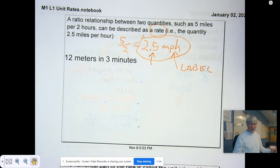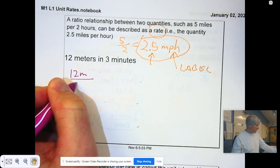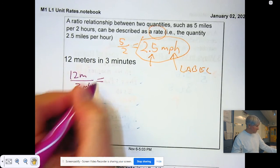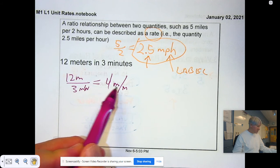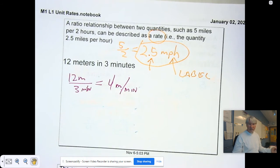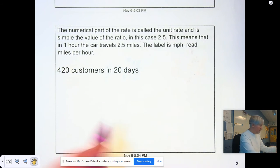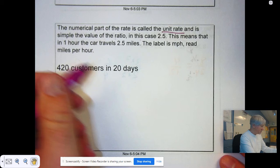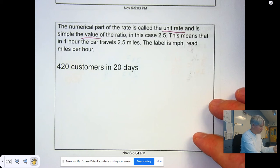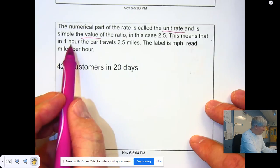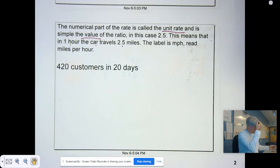The unit rate is found by dividing. If I wanted to find the unit rate, 12 meters in 3 minutes, that's going to be 12 divided by 3. That's 4 meters per minute, meters divided by minutes. The numerical part of the rate is called the unit rate, and it's the simple value of the ratio. Divide and you find it. 5 divided by 2, 2.5. The one hour for travel time gives you 2.5 miles in distance, miles per hour.